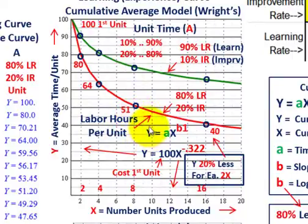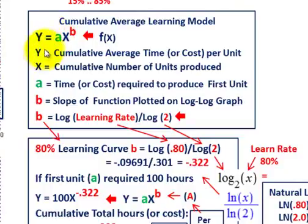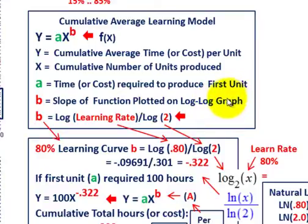We need to develop the equation for average time. The equation is: y equals a times x raised to the power of b, where a is the time or cost required to produce the first unit (100 hours in our case), y is the cumulative average time on a per unit basis, and x is the cumulative number of units produced. The key variable b is the slope of the function plotted on a log-log graph, calculated as the log of the learning rate (0.80) divided by the log of base 2.